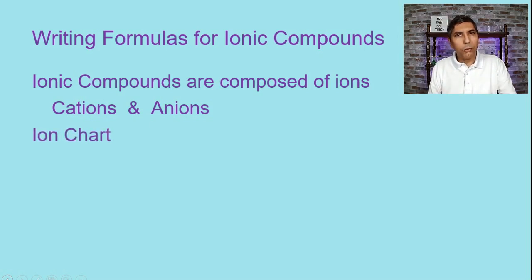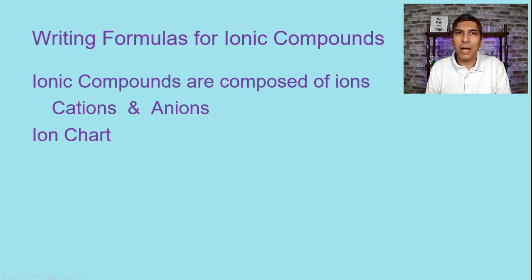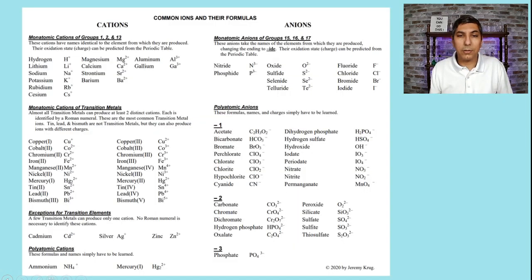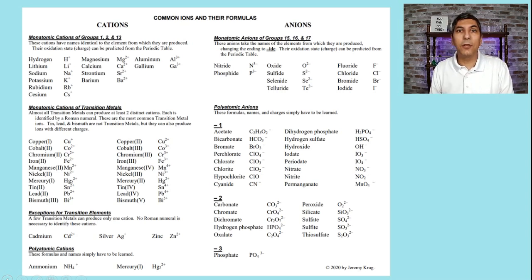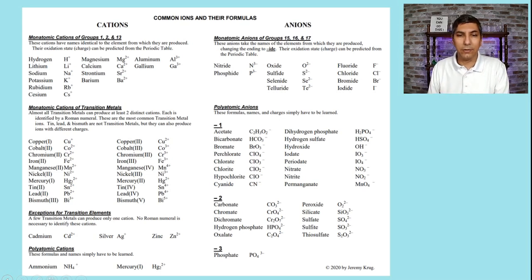As we work through these examples, it's important to realize that there are a lot of cations and anions that we could possibly be using as we write these formulas. So if you're taking a chemistry class right now, your teacher has probably given you or will give you something like this — an ion chart. If you'd like to use my ion chart, you're welcome to. I'm going to put a link to the PDF version in the description below so you can download and use it.